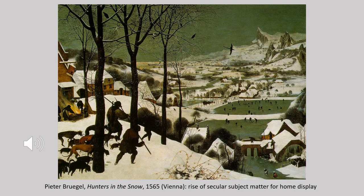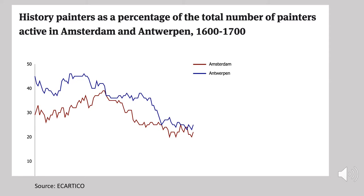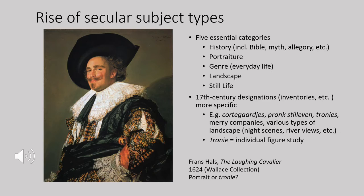Already in the 1560s we see the rise of interest in secular contemporary subject matter, abetted by the Protestant Reformation and the increasing interest in purchasing works of art for home display rather than churches. In a graph from the Ecartico database built at the University of Amsterdam, you can see that both in Flanders and in the north the production of history painting as a percent of total art production declines over the course of the 17th century, while other kinds of subject matter rise in popularity.